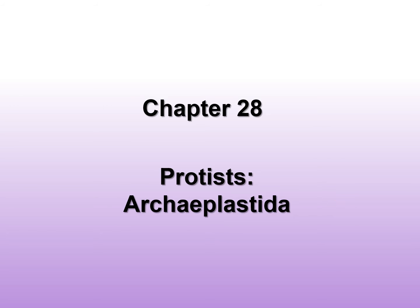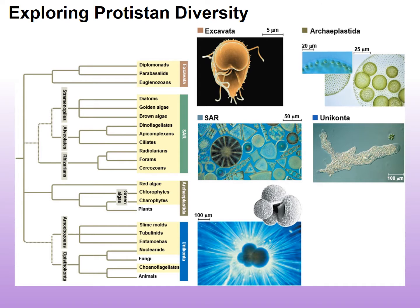Welcome to the next segment on the supergroups of protists — the archiplastida. We've already discussed the excavates and the SAR group, which includes the straminophiles, the alveolates, and the rhizarians. Now we're on the archiplastida. The archiplastida include the red algae and the green algae, which split into two major groups: the chlorophytes and the charophytes. The charophytes are the closest relatives to plants, shown here as sister groups. The final segment will include a discussion of the groups in the clade uniconta.